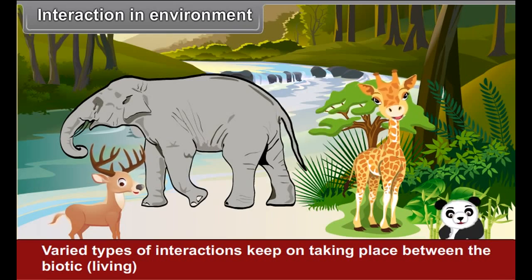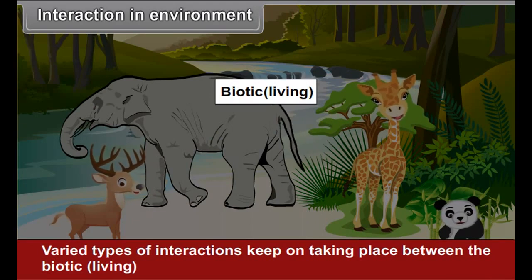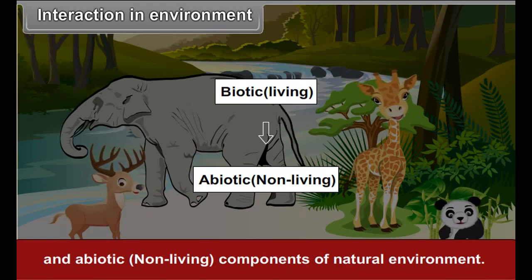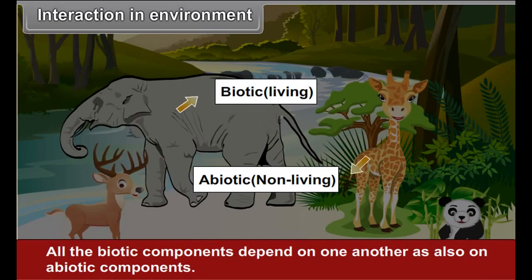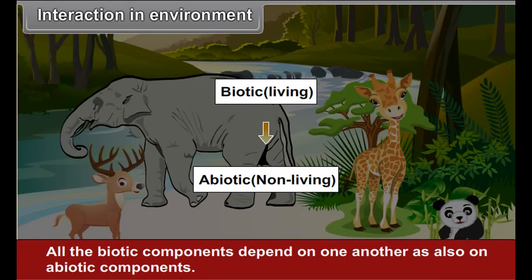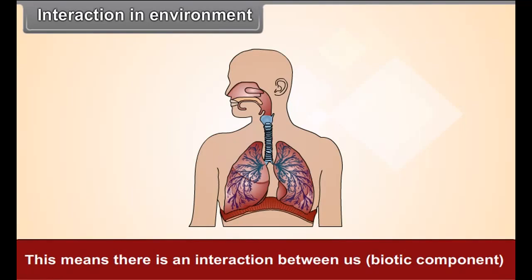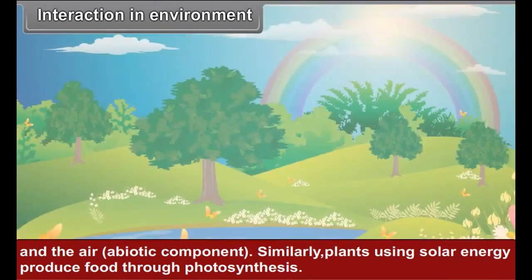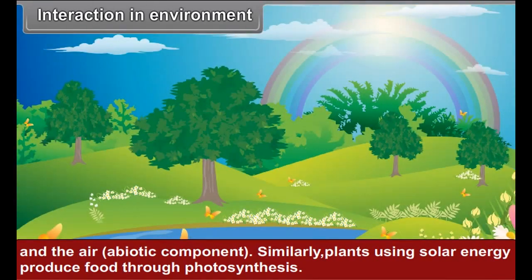Interactions in Environment: Varied types of interactions keep on taking place between the biotic, i.e. living, and abiotic, i.e. non-living, components of the natural environment. All the biotic components depend on one another as also on abiotic components. We constantly breathe in and breathe out air — this is an interaction between us, the biotic component, and the air, the abiotic component. Similarly, plants using solar energy produce food through photosynthesis, which is also an interaction between the biotic and abiotic components.